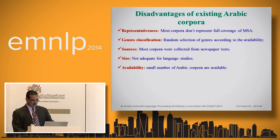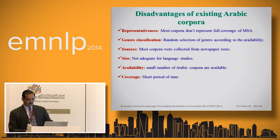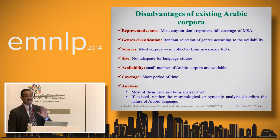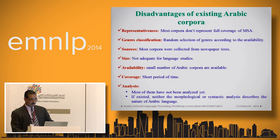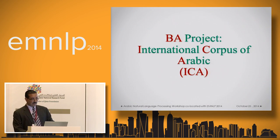Sources are mostly coming from newspapers and the size is not adequate for language studies. Availability is another issue — a small number of corpora are available and coverage is not that high. And in terms of analysis, where analysis exists, it may not represent the nature of the Arabic sentence or Arabic word in general, but instead adopts some Western criteria in order to analyze the Arabic language word.